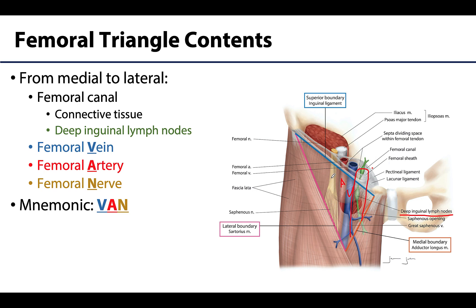The most lateral large structure is the femoral nerve, which is the largest branch of the lumbar plexus. It is the dominant supply to the anterior thigh and also provides cutaneous innervation to multiple areas — we'll discuss that in more detail in upcoming sessions. It gives off numerous branches within the femoral triangle, as represented here.